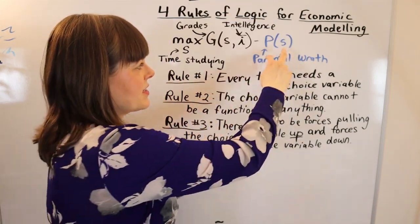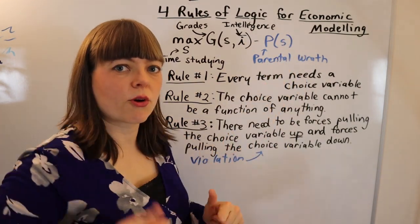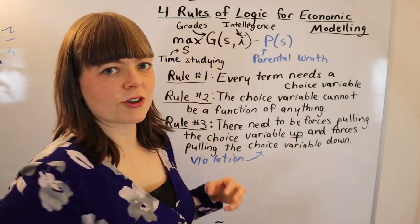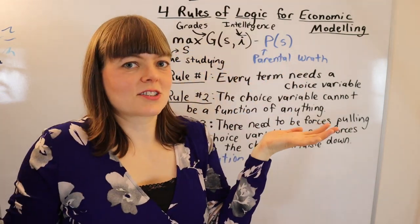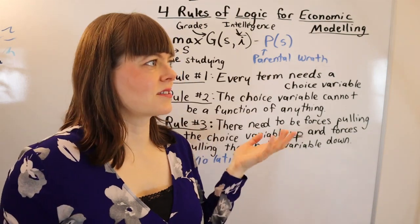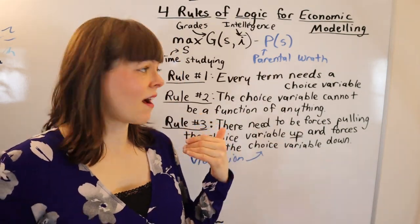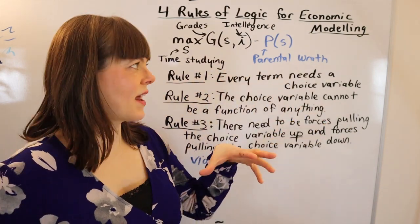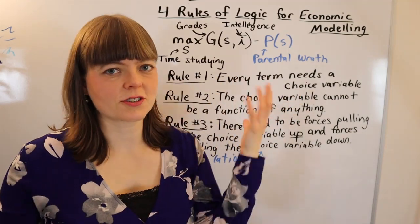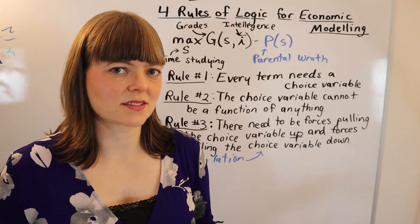This force—we know that studying more is going to decrease parental wrath, so this has a negative relationship. This is actually also going to pull study up. Both of these forces make you want to study more, so the solution to this model is just study 24/7, which is not reasonable and also not realistic. That means we have not yet built in a force that pulls us down. We need to add a term for opportunity cost or effort costs or something like that in order to make this model actually make sense.